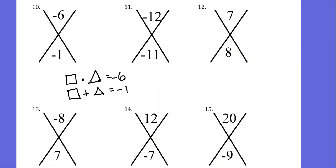So let's start thinking through some possibilities. What times what would give me negative six? Well, I got one and six, and two and three.